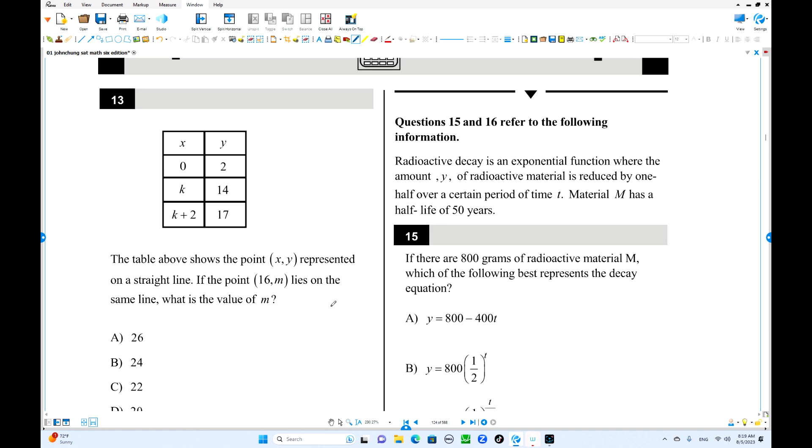Number 13, we have a table. That is a straight line. You have one more point not in this table, 16 and M. You can write down here 16 and M. What is the value M? We need to find the slope of the line using these two points. 17 minus 14 is 3, k plus 2 minus k is 2, slope is 3 over 2.